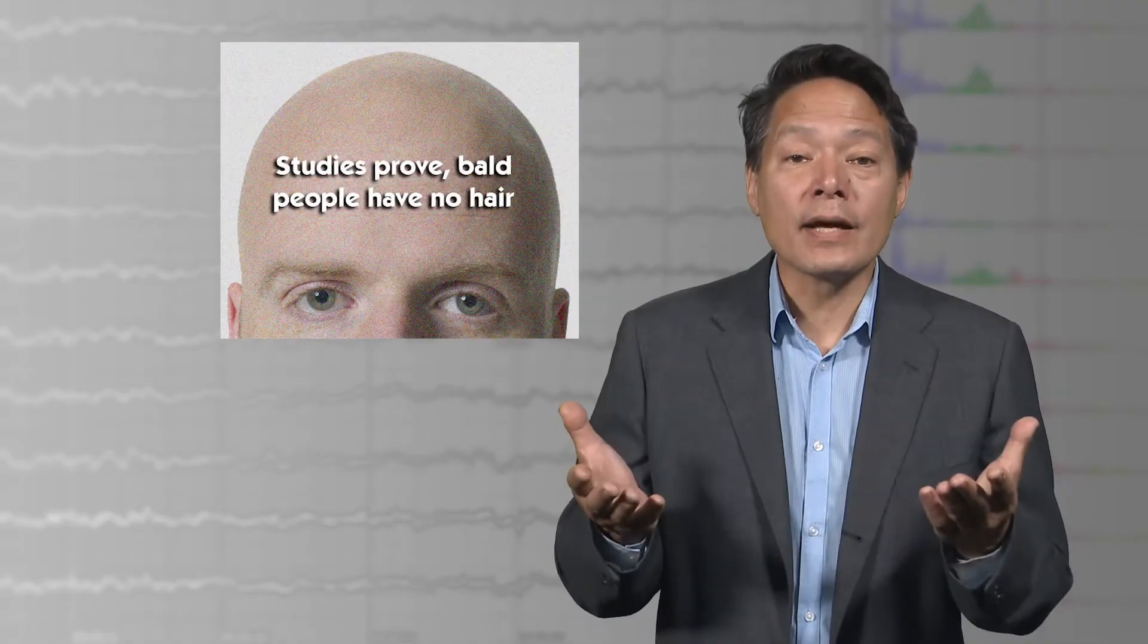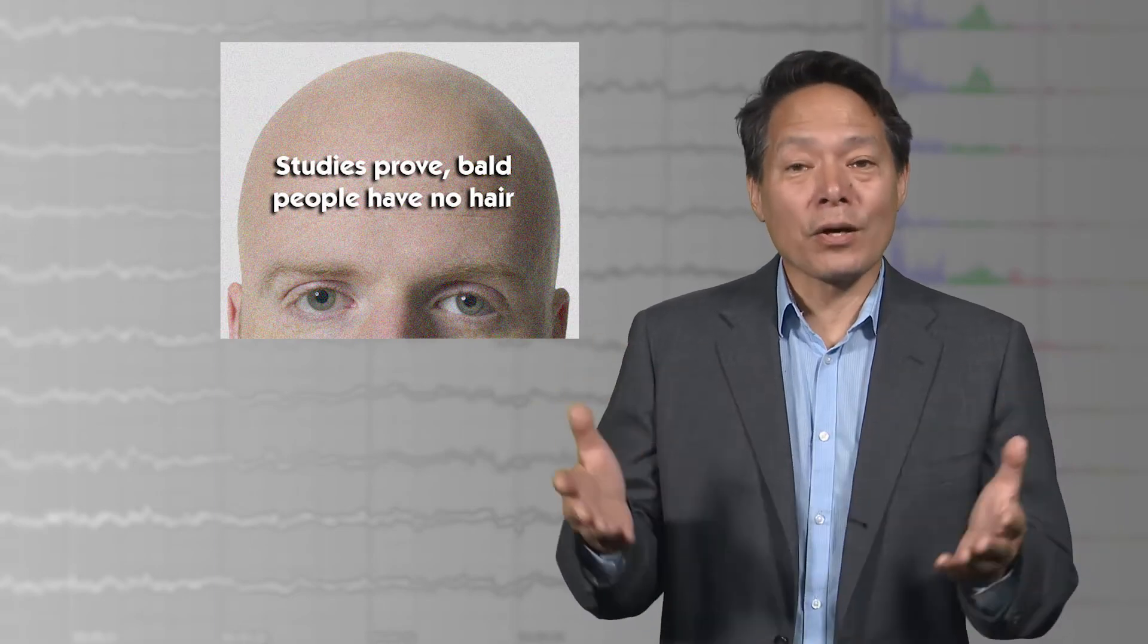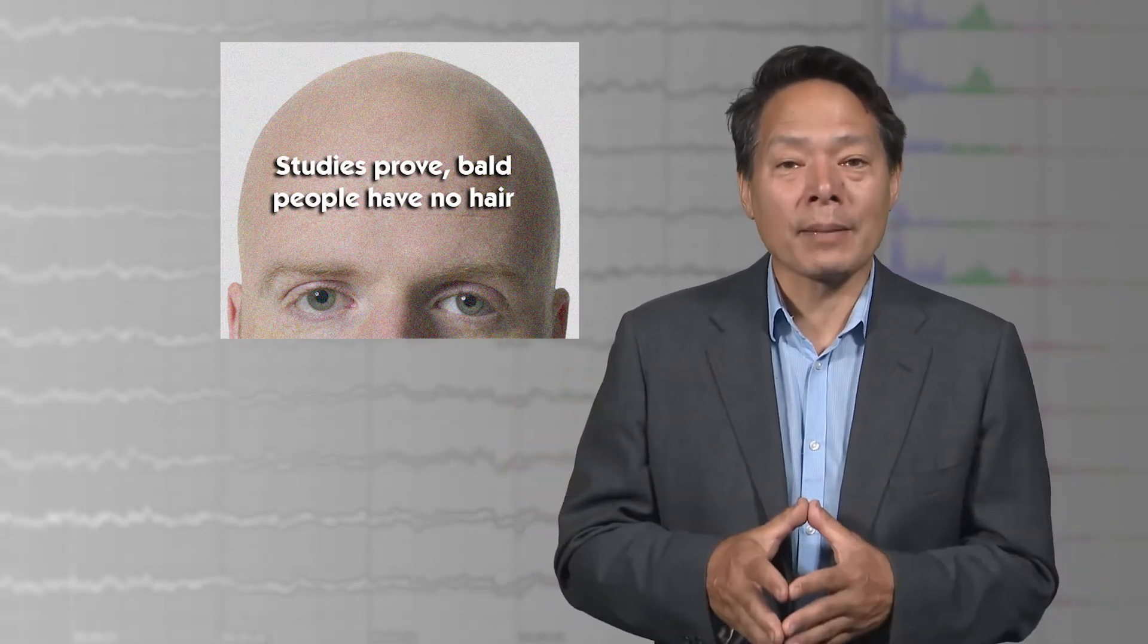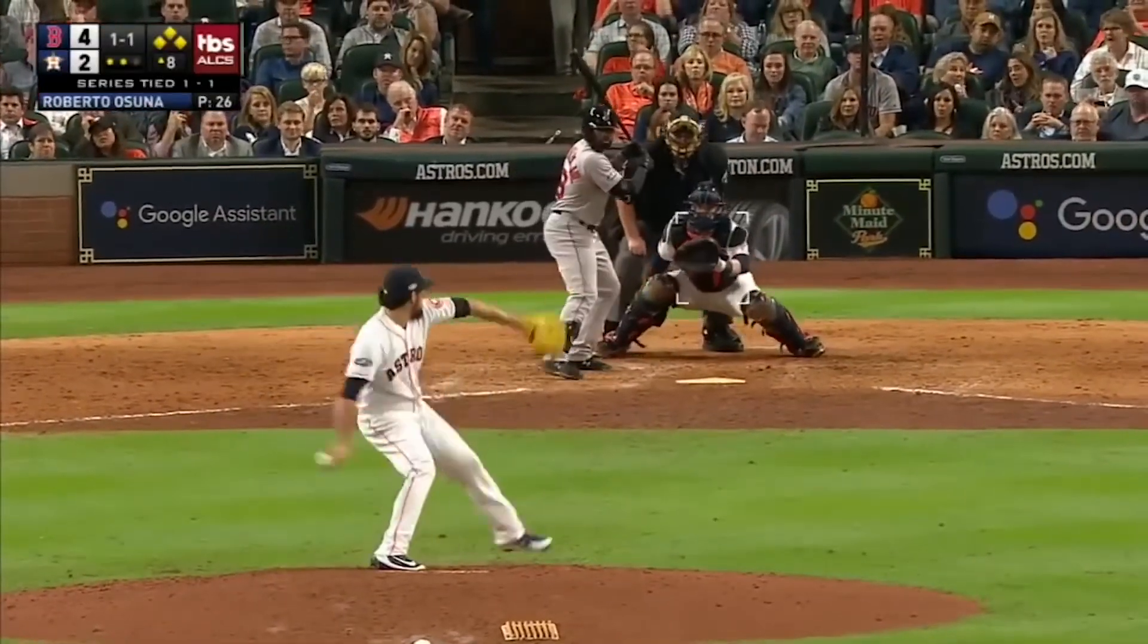And those brain events had to be caused by prior brain events, even if non-deterministically, and so on, and so on, back through time, just as the pitcher pitching the ball had to be preceded by the pitcher going to the park, and getting up in the morning, and being born, and so on, and so on, back into the distant past.